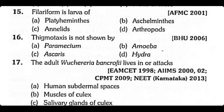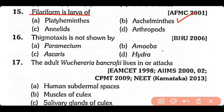Question 15: Filariform is the larva of Platyhelminthes — true or false? The correct answer is Option B (false). Filariform is the larva of Wuchereria bancrofti, which belongs to phylum Aschelminthes.